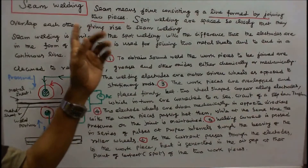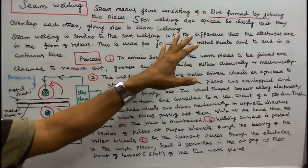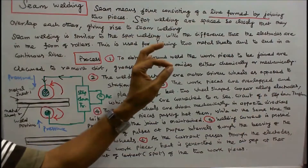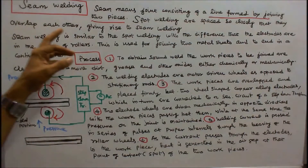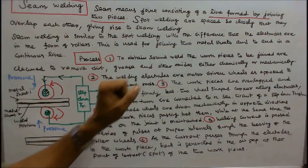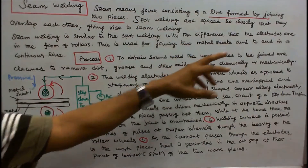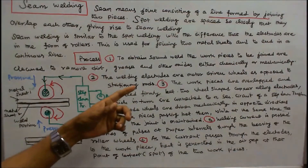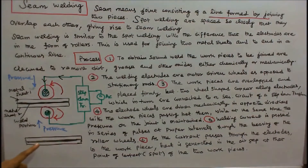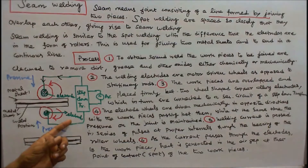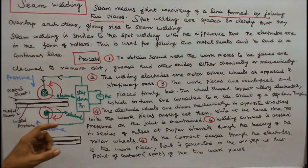This class we discuss about seam welding. Seam means a joint consisting of a line formed by joining two pieces. Spot welds are spaced so closely that they overlap each other, giving rise to seam welding. Seam welding is similar to spot welding with the difference that the electrodes are in the form of rollers. This is used for joining two metal sheets end to end in a continuous line. This is the arrangement of seam welding, consisting of two electrodes, two rollers, and a step-down transformer.